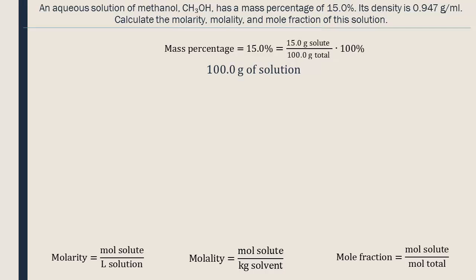This way, if we have 100g of solution and 15% of the mass comes from the solute, we have 15g of solute. The rest of the mass comes from the solvent, so we have 85g of water.